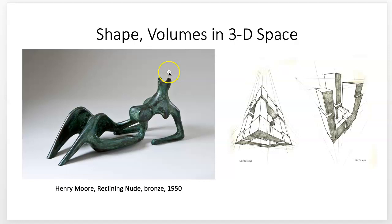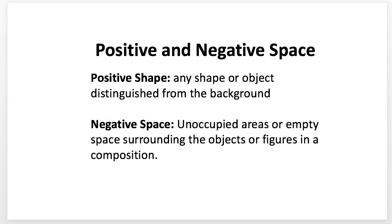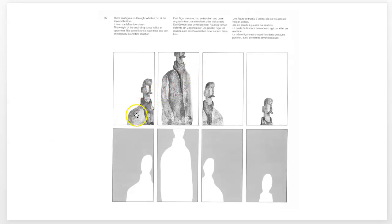Shape becomes volume in actual 3D space, and then there's the illusion of volume through perspective systems creating depth — you can't poke it into the paper, it's flat. Negative space shapes and volumes are shape and space. Positive shapes are any shape or object distinguished from the background. Negative space is the unoccupied area or empty space around it in the composition.